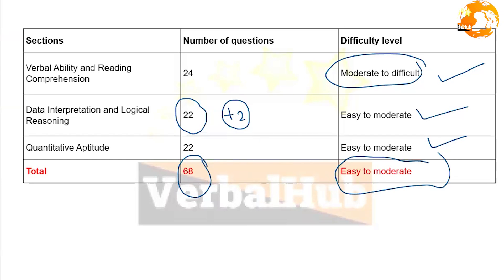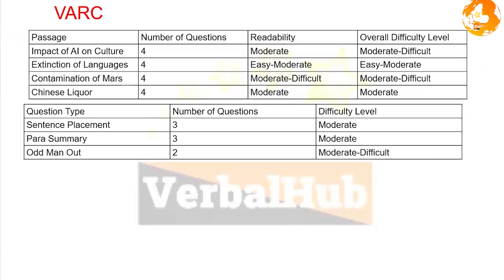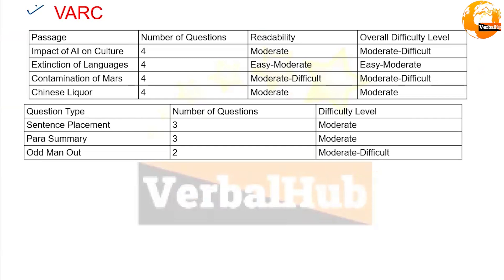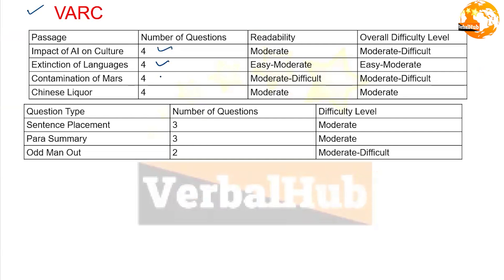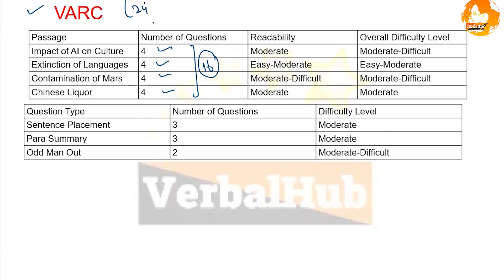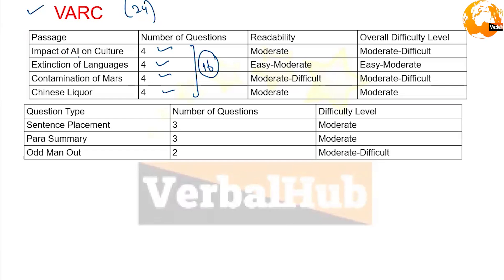Coming to what was asked in Verbal Ability and Reading Comprehension: there were four passages, each with four questions, giving 16 questions from RC. The total number of questions in verbal was 24, so 16 came from RC. One passage was based on the impact of artificial intelligence on culture, and another on extension of languages.